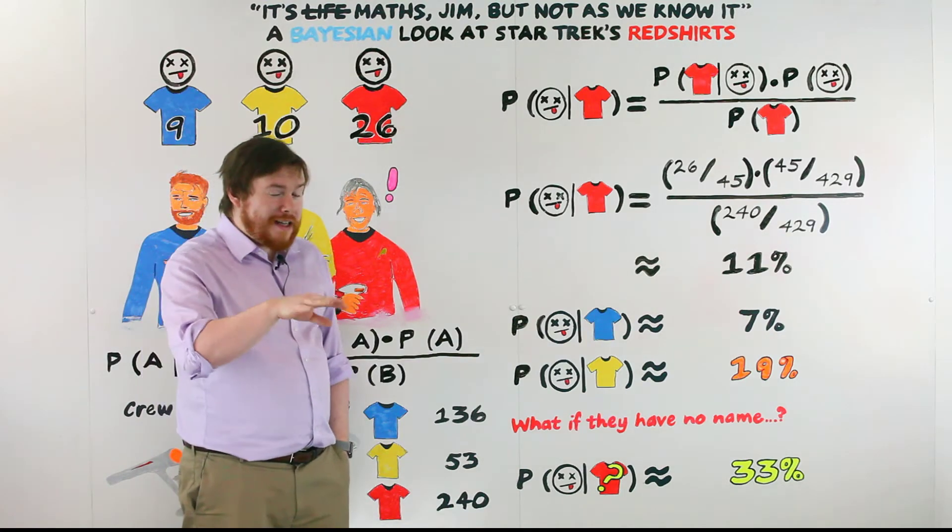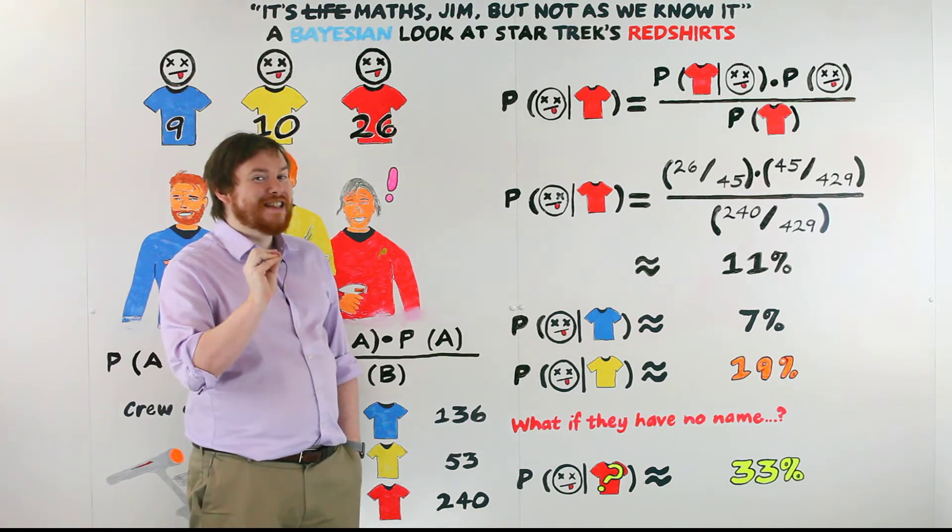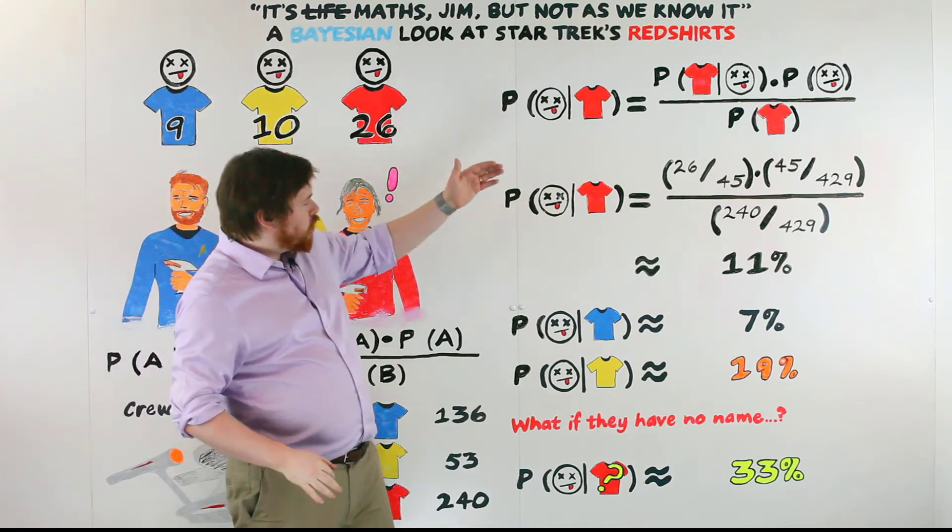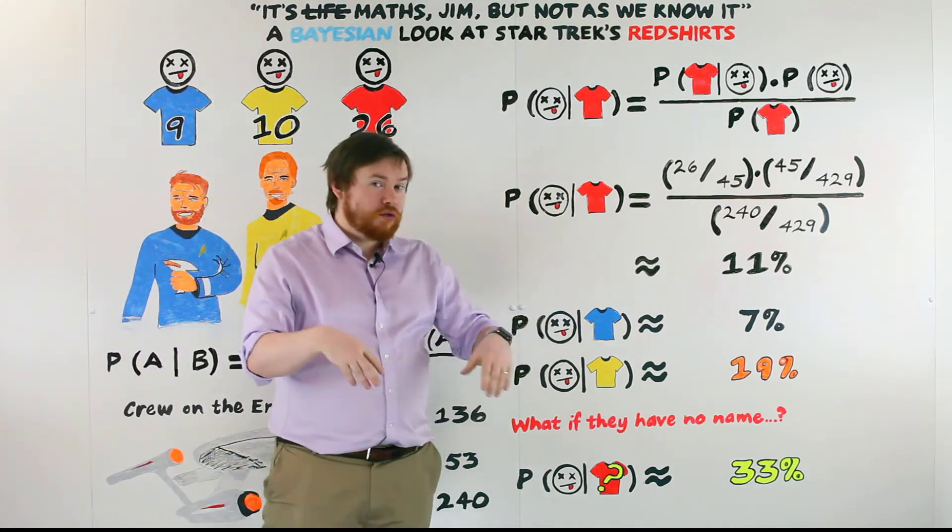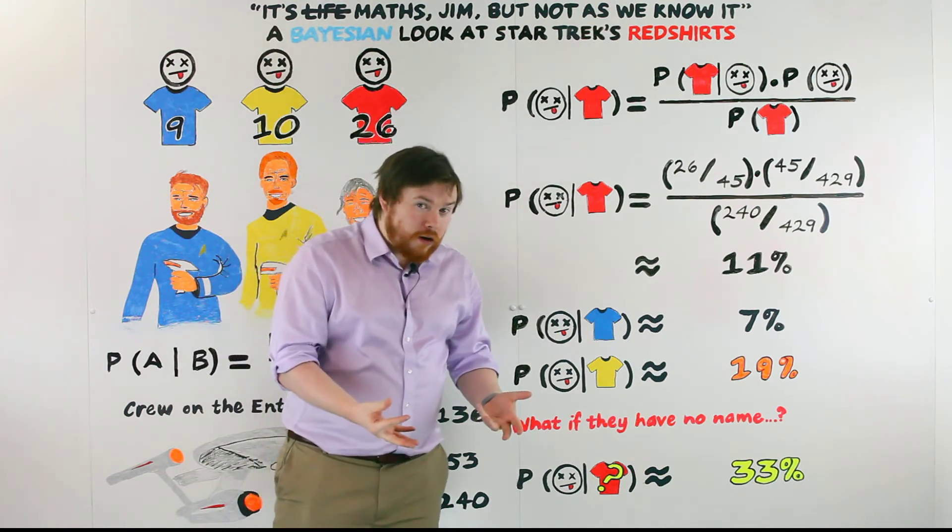However, we all know that the best example of a disposable character is someone who isn't given a name. So we don't have room for all the maths, but you can actually calculate this for somebody who doesn't have a name, and use that to update the prior in Bayes' theorem.